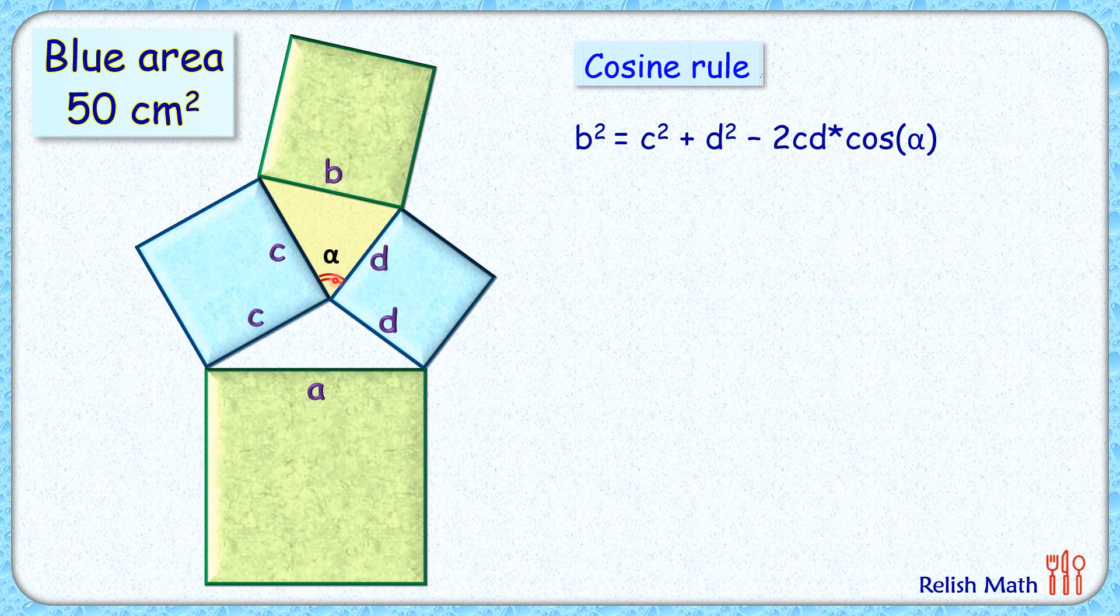Now if we take the angle across this point here, so this angle is 90 degrees, this angle is 90 degrees, and thus this angle will be 360 minus 90 minus 90 minus alpha, that is 180 minus alpha.